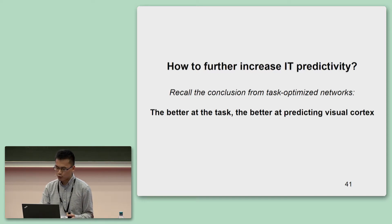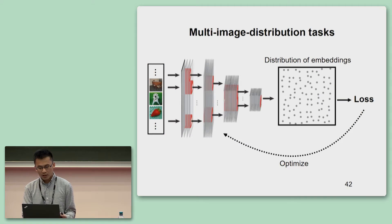To further increase the IT predictivity, we recall the conclusion from task-optimized networks. That is, if the networks are better at categorization tasks, they will also be more similar to visual cortex. Therefore, we just need to develop or find stronger self-supervised tasks. Luckily, AI researchers have been working very hard in this domain too. And since last year, there have been a new class of tasks which achieve much better performance than the single image statistics tasks introduced earlier. All these tasks have the similarity that their objective functions are defined on the distribution of all image embeddings, which is why I named them as multi-image distribution tasks.